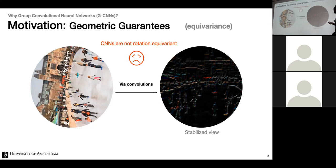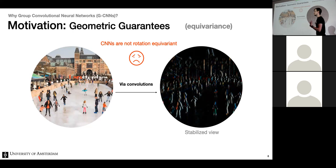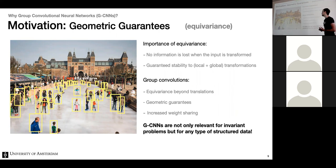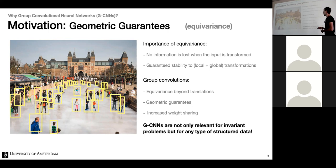CNNs are not rotation equivariant. If you rotate the image, the color-coded features completely change — it's unstable. If you have a detector based on some filters and you rotate the input, you get a completely different output. The importance of equivariance is that no information is lost when the input is transformed, and we can guarantee stability to transformations — both local and global.